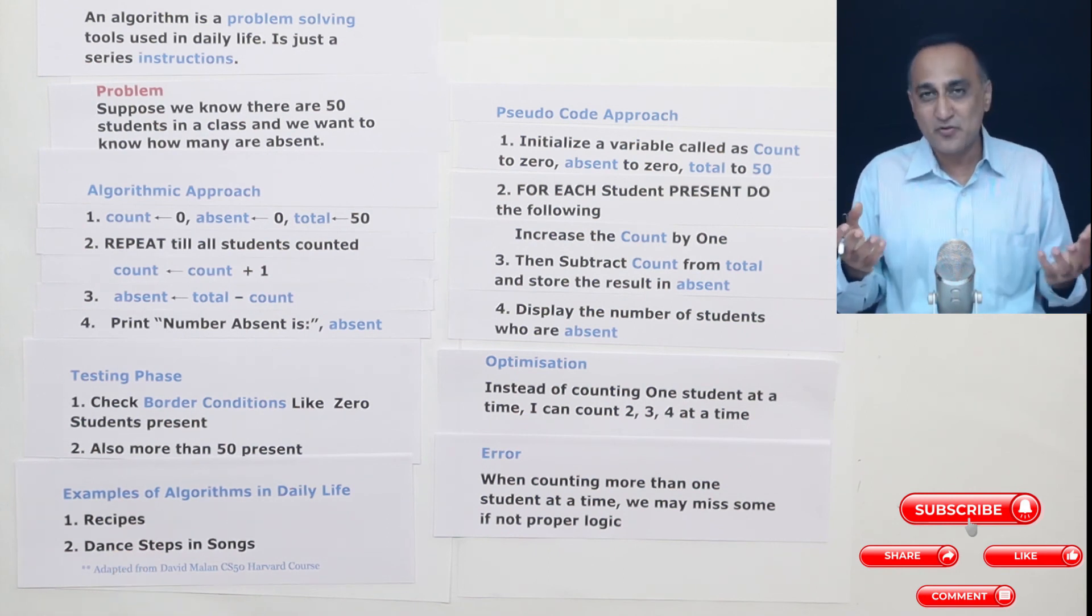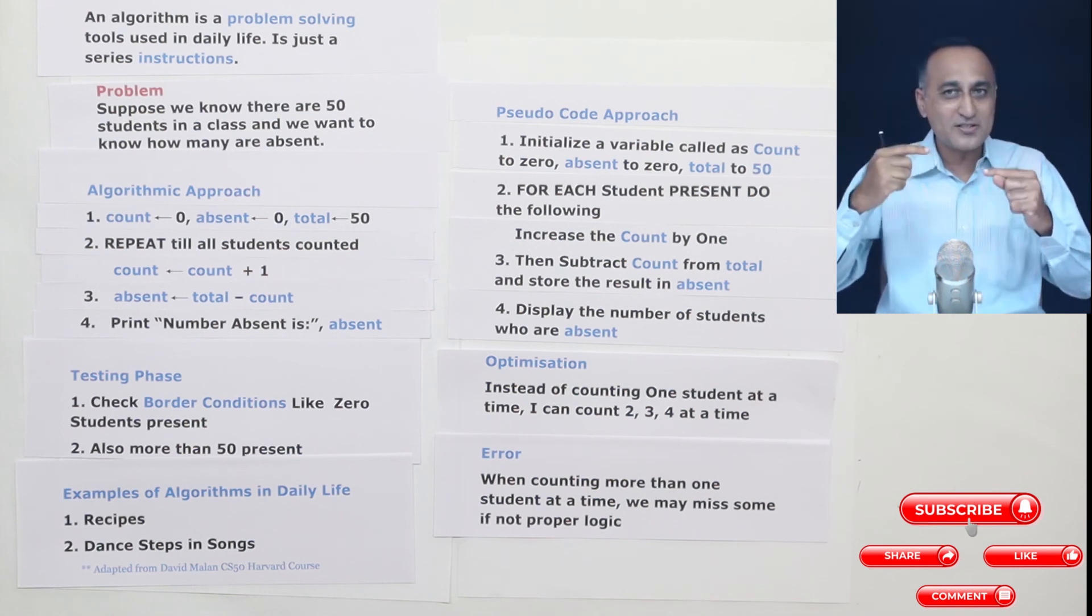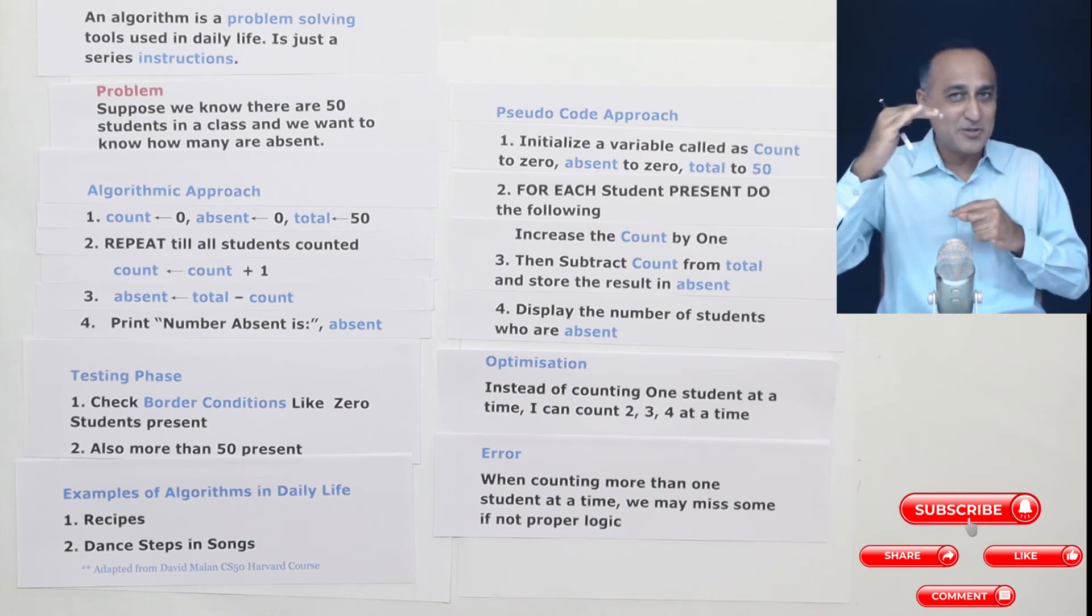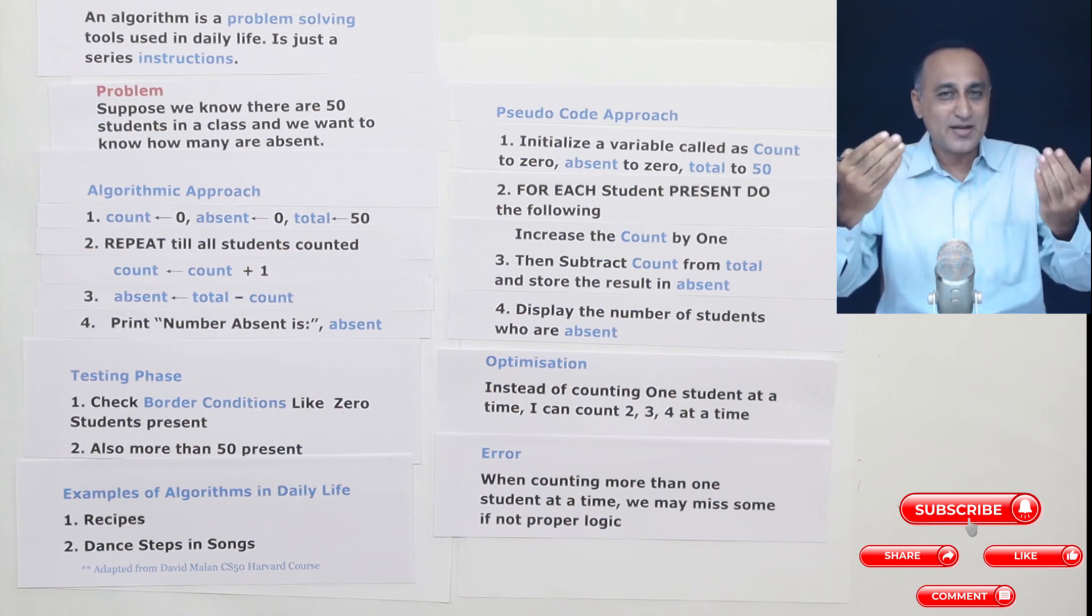Now if you have seen dances in lot of movies or things, the dance is not some random steps. There is a particular logic in the dance steps. Based on the song words, you repeat certain steps. So there is a particular sequence. So even dancing actually is an algorithmic approach.